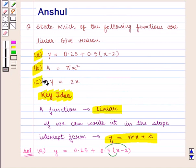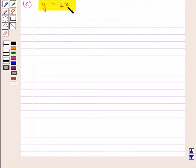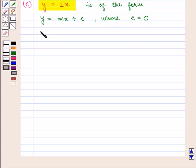In the third part we are given y = 2x. We can see that the equation y = 2x is of the form y = mx + c where the value of c is 0.